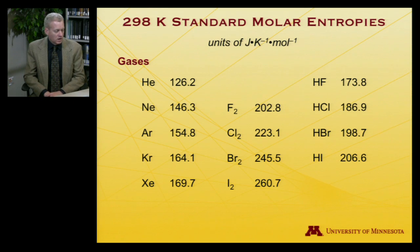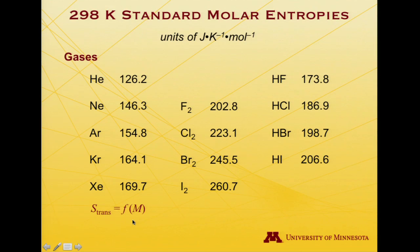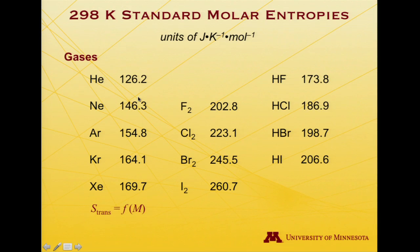Looking at a variety of gases — starting with the noble gases — they range in entropy from 126.2 joules per Kelvin per mole for helium up through neon, argon, krypton, and xenon at 169.7. The variation is because the translational partition function involves the mass of the molecule. Ordered by increasing mass, the increments get smaller and smaller — increasing by 20, then 8, then 10, then 5 — because it's not linear in mass; it's the log of the mass.